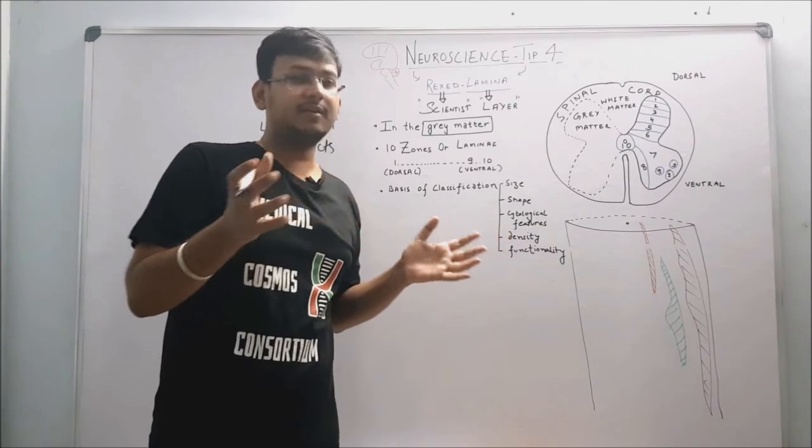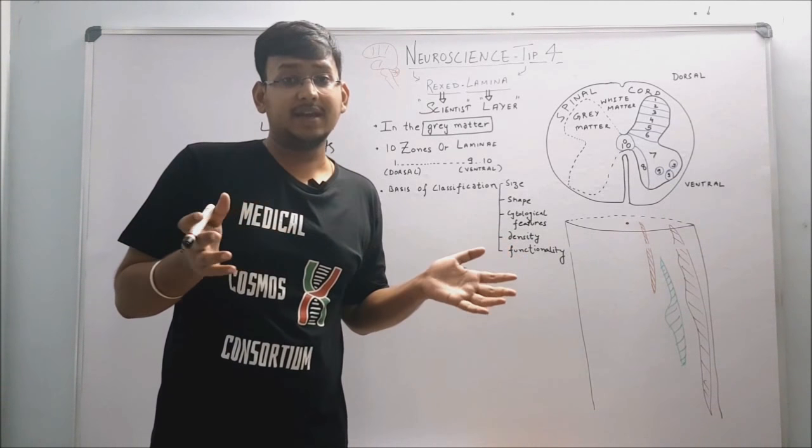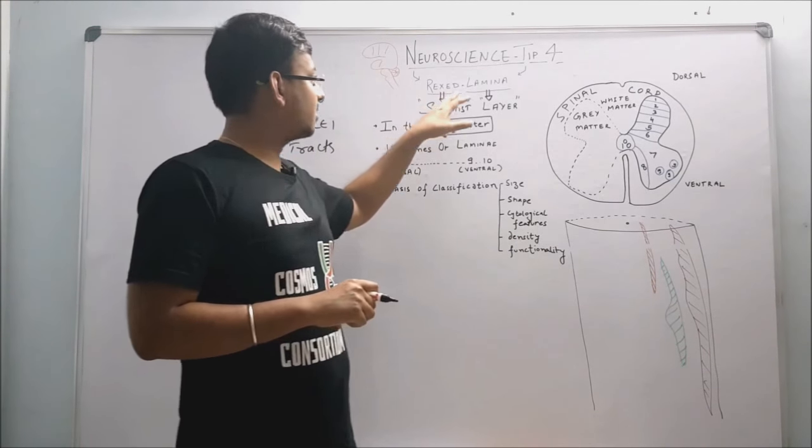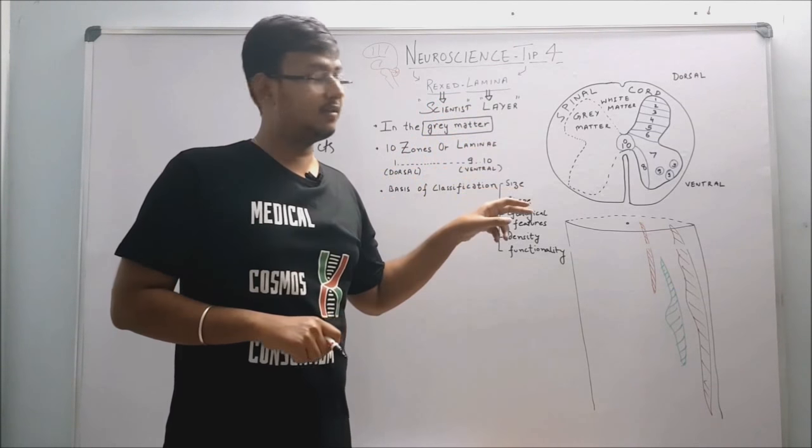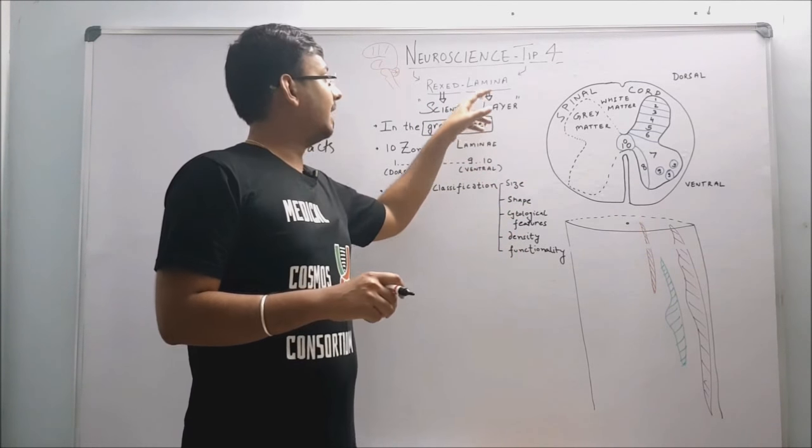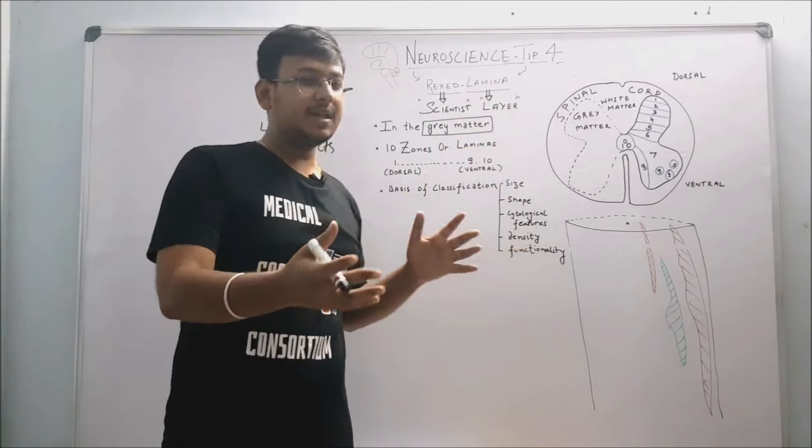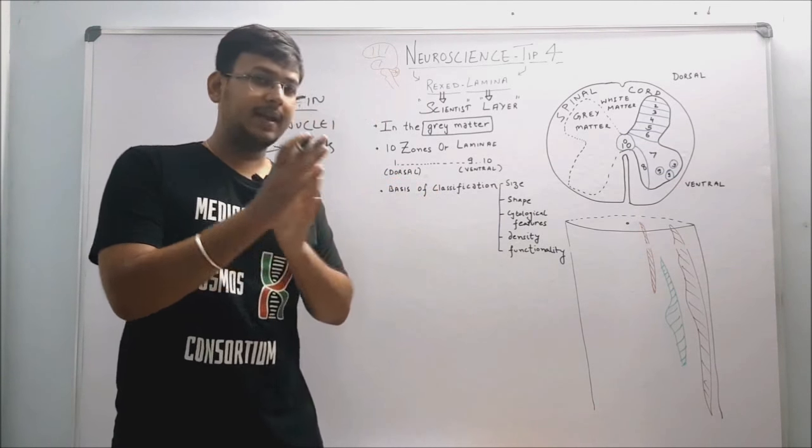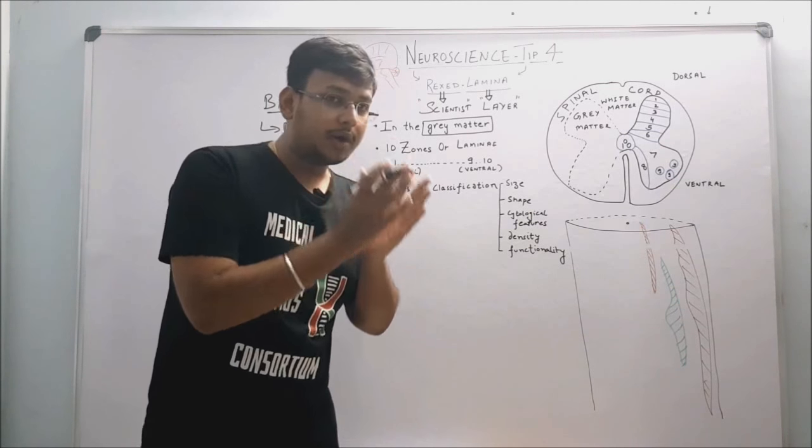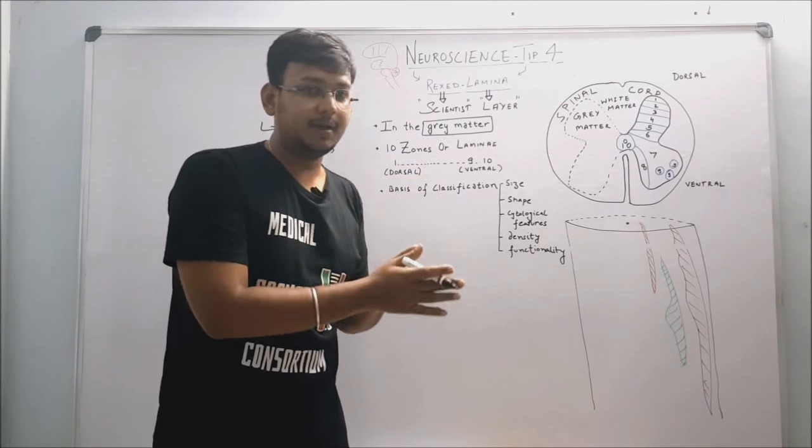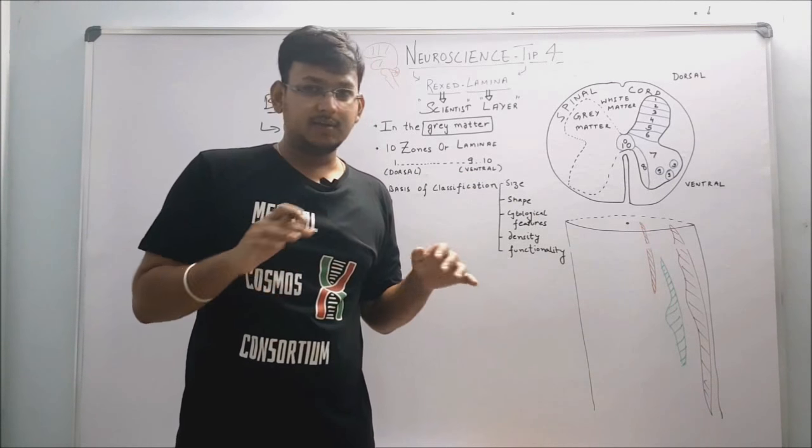So Rexed - Mr. Rexed was a scientist, he was a neuroscientist, and lamina means layer. Basically what he did: he classified the gray matter of spinal cord according to layer-wise anatomy in the gray matter of spinal cord. It might sound confusing, so before that, let us go to general anatomy of CNS first.